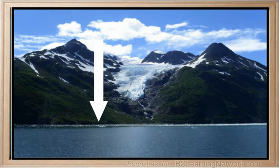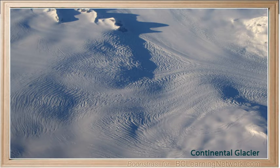The glacier moves because pressure from the weight of the overlying ice causes it to deform and flow. Meltwater at the bottom of the glacier helps it to glide over the landscape. A glacier is a moving mass of snow and ice that moves downhill under the force of gravity.